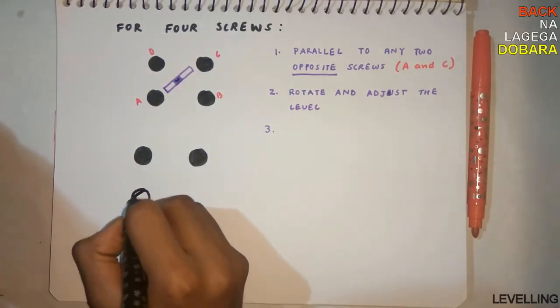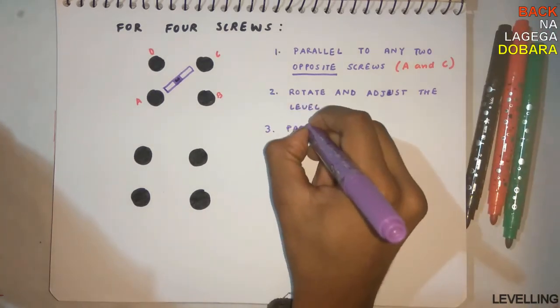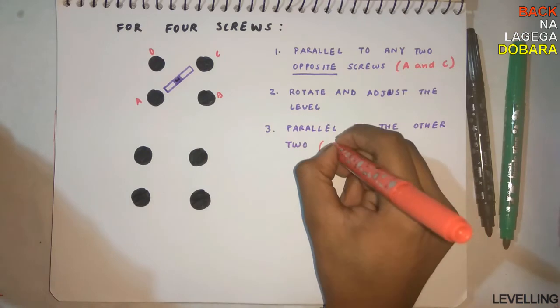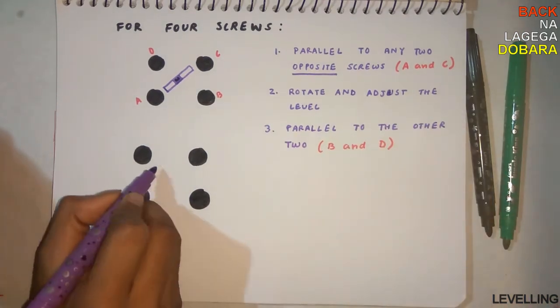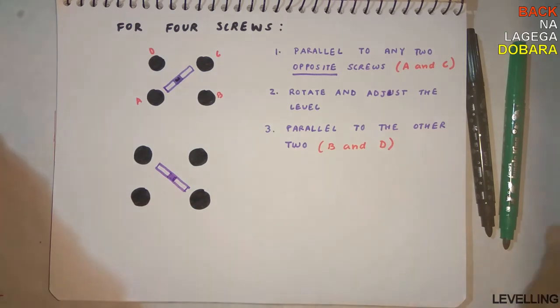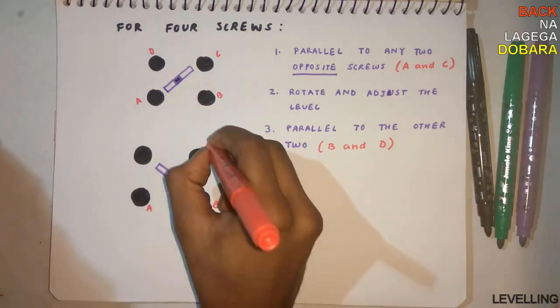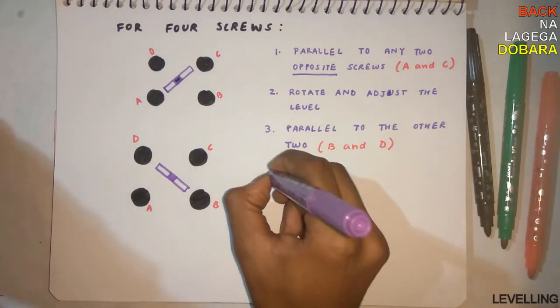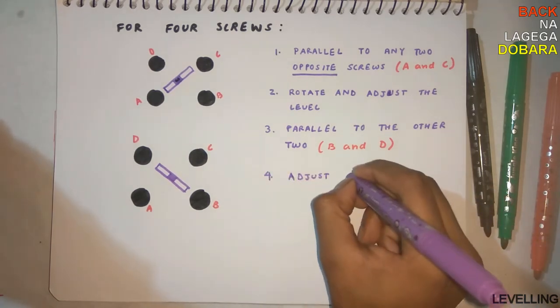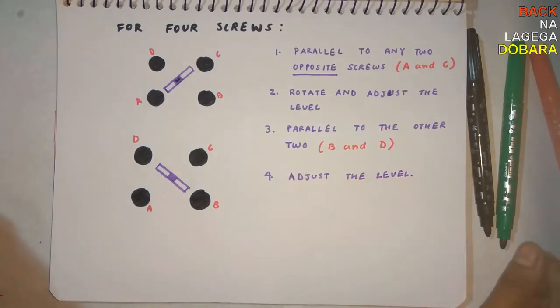As discussed, when it's done, just parallel the level to the other two screws, B and D. Then rotate and adjust as discussed before. Then rotate it to the last time. You can do it. Thank you.